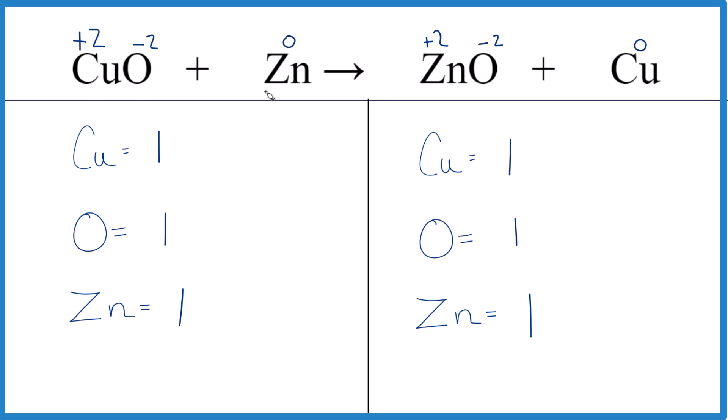That's it. This is Dr. B with CuO plus Zn yields ZnO plus Cu.